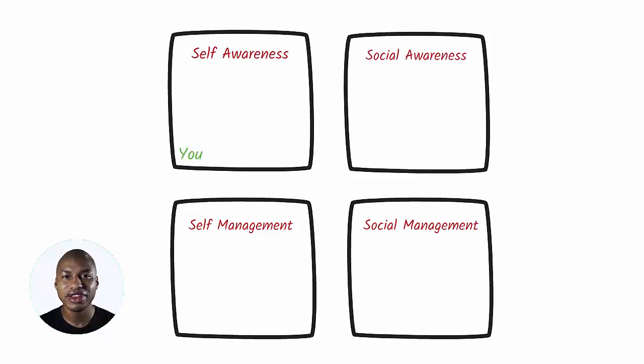The self-quadrants refer to the ability to identify our own emotions and manage them. The social quadrants refer to the ability to identify the emotions of others and manage them to guide the situation.